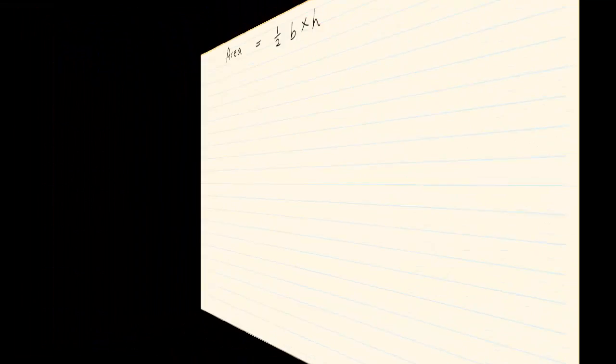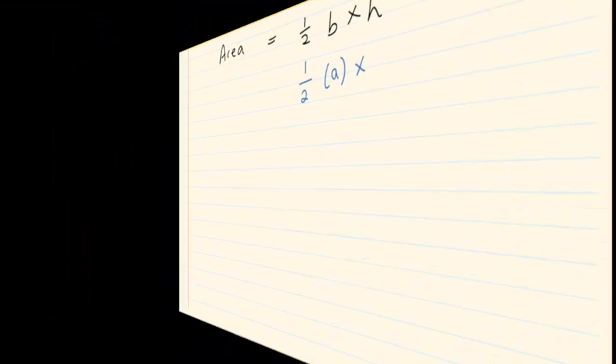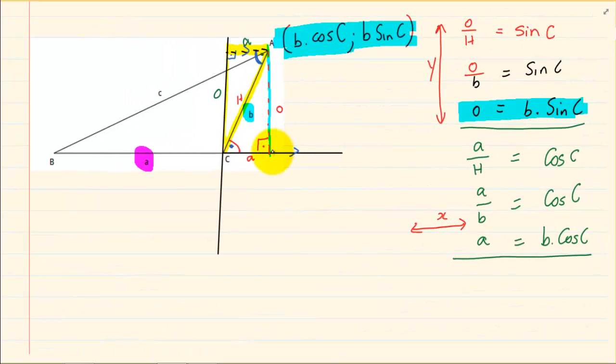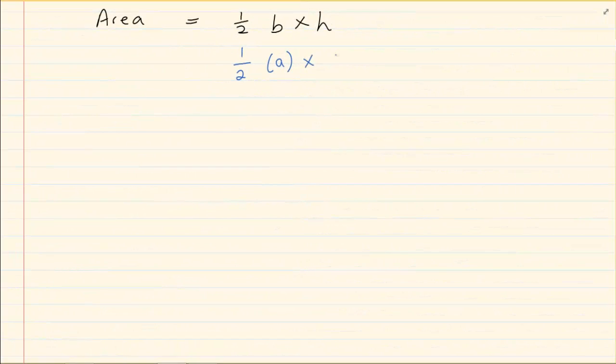So we have half. Our base is A. And then what is our perpendicular height? What is the height that is 90 degrees? Can you see? The height that is 90 degrees is a reference to this y value. And this y value is B sin C. Times B sin C. So what do we have? We have half A B sin C. And that is the area rule.